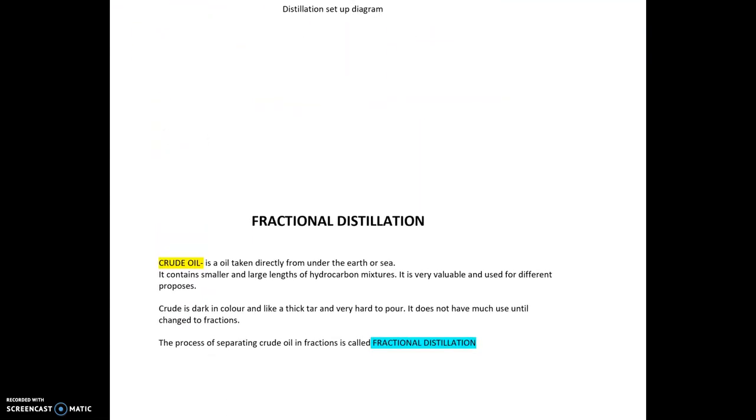Fractional distillation is used to separate something called crude oil. Crude oil is found underneath the earth and under the sea. Crude oil is made out of large and small lengths of hydrocarbon chain with different fractions in it and it's really valuable but as a crude oil it's not very useful to us. We need to change it into useful fractions and the process of separating crude oil into separate fractions is called fractional distillation.